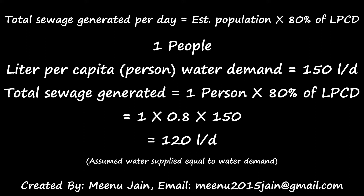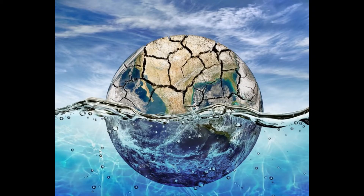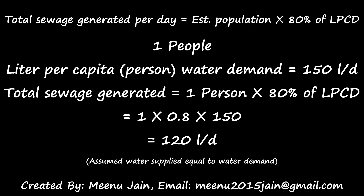Here, LPCD or liter per person per day water demand is 150 liters per day, though it can vary from place to place — if there is water scarcity, the demand can be reduced. So total sewage generated will be 1 multiplied by 0.8 (from 80%) multiplied by 150, which comes to 120 liters per day.